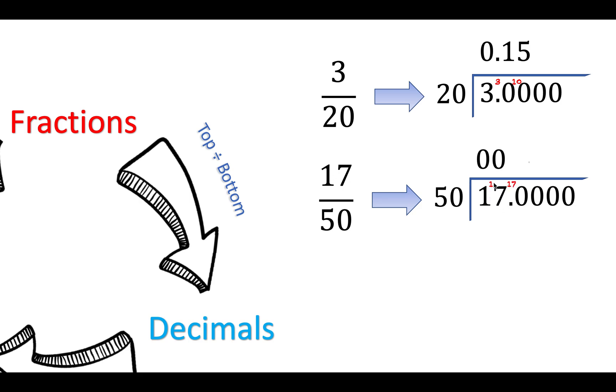So we carry the seventeen over. How many fifties go into one hundred and seventy? Three. Three times fifty is one hundred and fifty. One hundred and seventy minus one hundred and fifty is twenty, so there is a remainder of twenty. How many fifties go into two hundred? Four, and there are no remainders. That is the final answer.